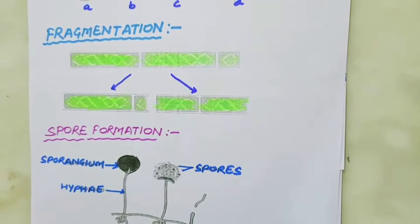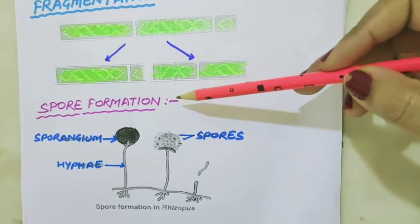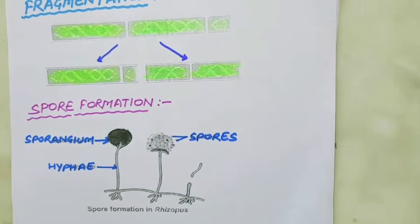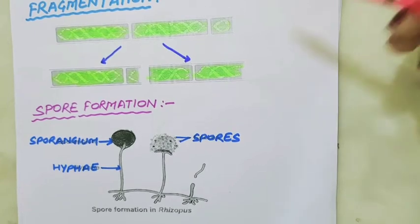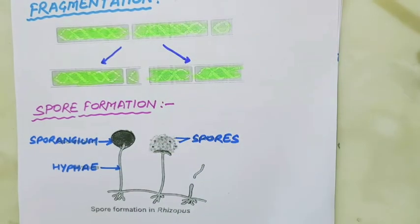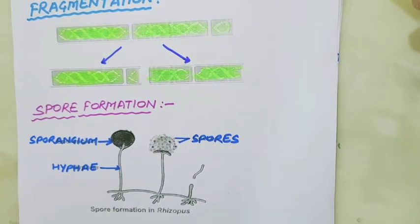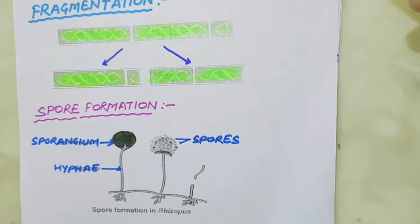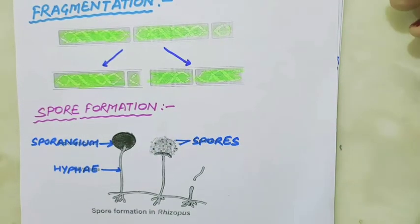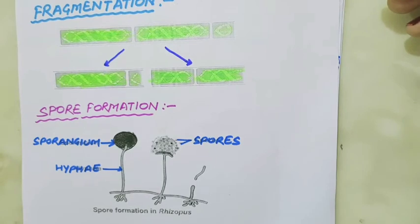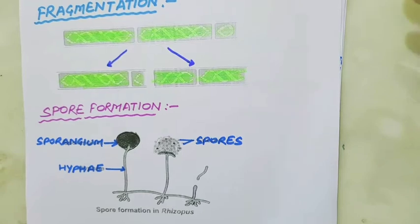If this process continues, it will cover a large area in a very short period of time. Spore formation is also a type of asexual reproduction. Some fungi like bread mold reproduce asexually by spore formation. Spores are formed inside the sporangium. Spores are small spherical bodies with a thick protective wall that protects them from unfavorable conditions. When favorable conditions arrive, the sporangium bursts, spores get into the air and germinate to develop into new plants. Spores are very light and can be carried over long distances by air or wind.